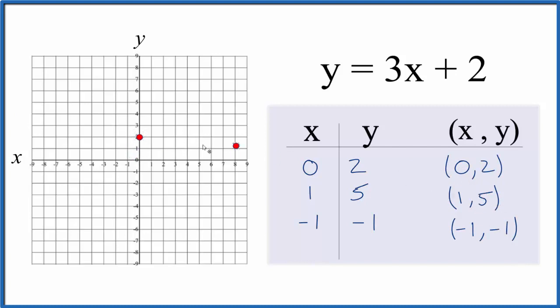For 1, 5, we go over 1, and up 1, 2, 3, 4, 5. And then for negative 1, negative 1, we go over 1 and down 1. And that gives us our graph.